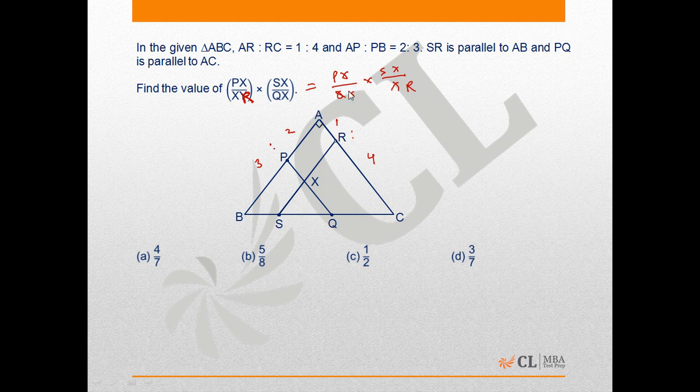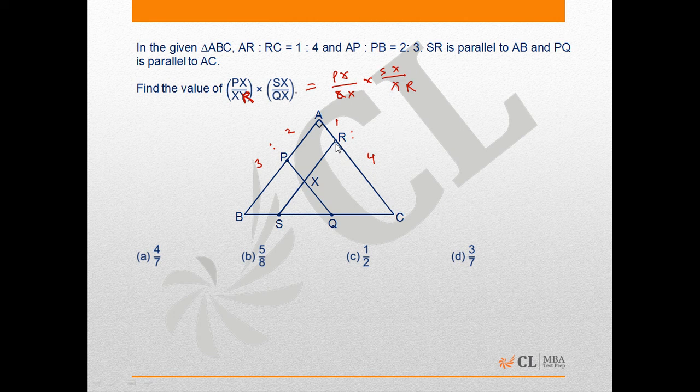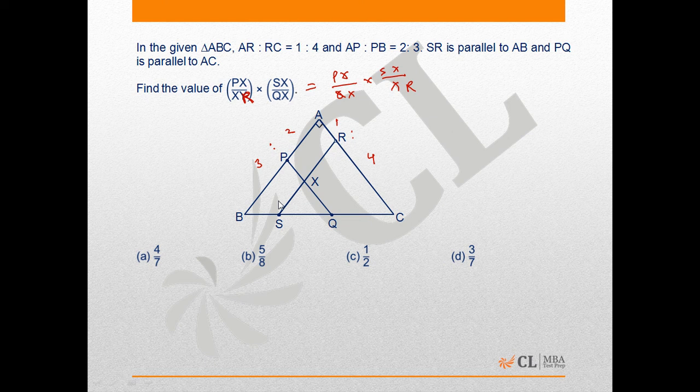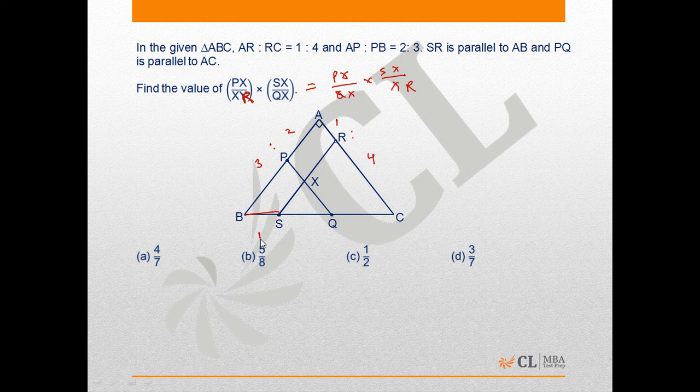Right, so now because RS is parallel to AB, in triangle ABC if a line is parallel to a side then it will divide the other two sides with the same ratio. If this ratio is 1 to 4, then PS to SC is also 1 to 4.